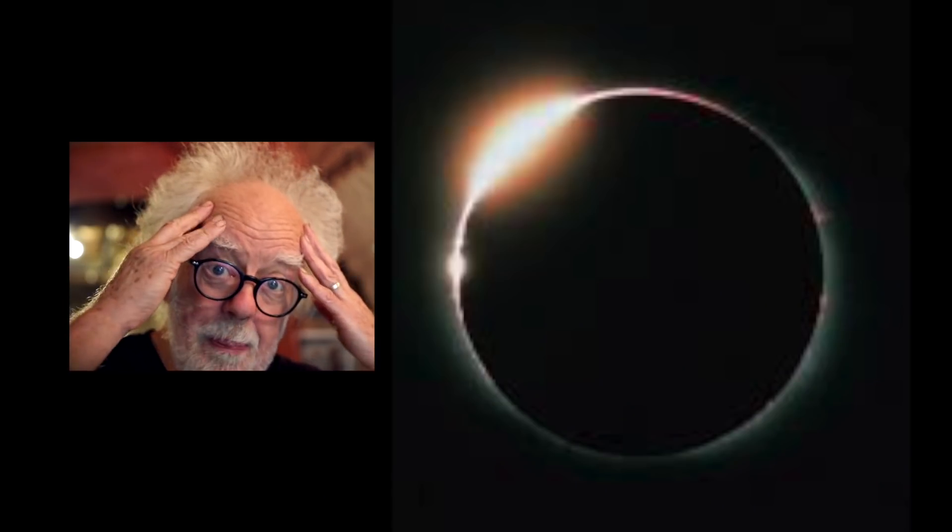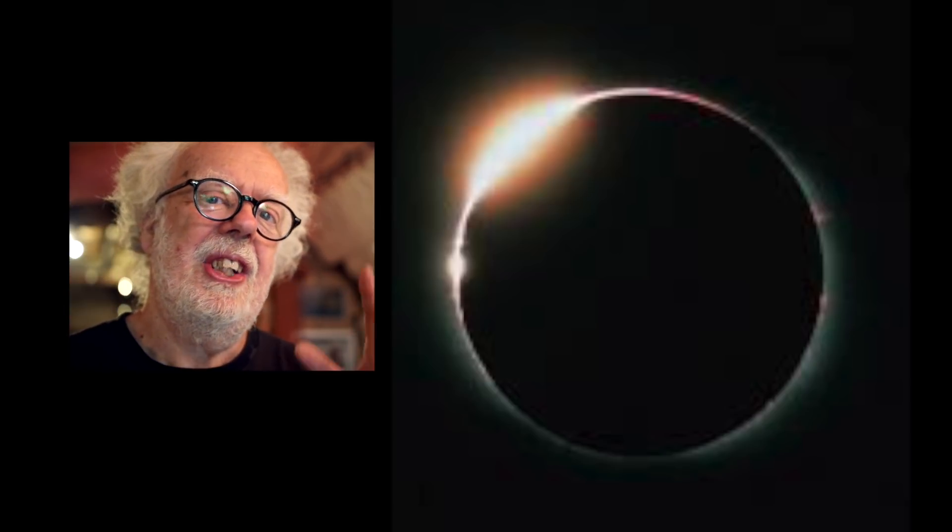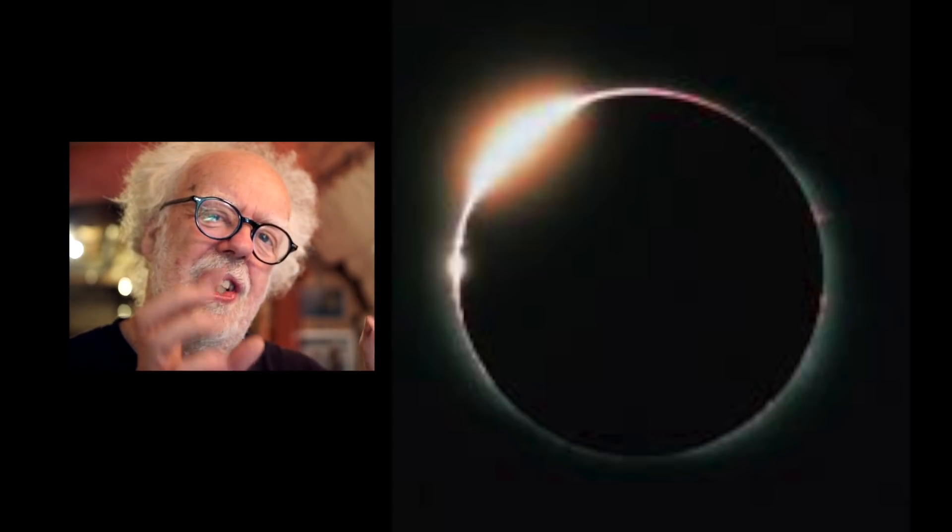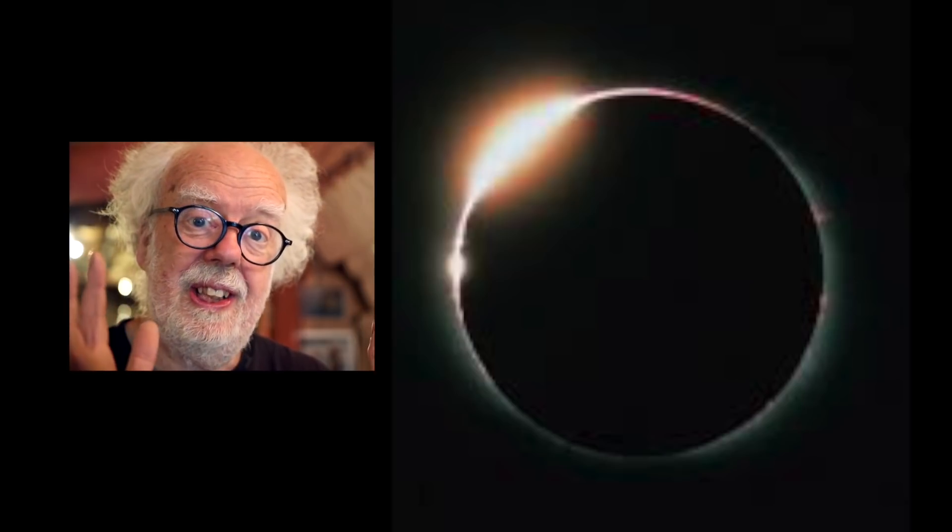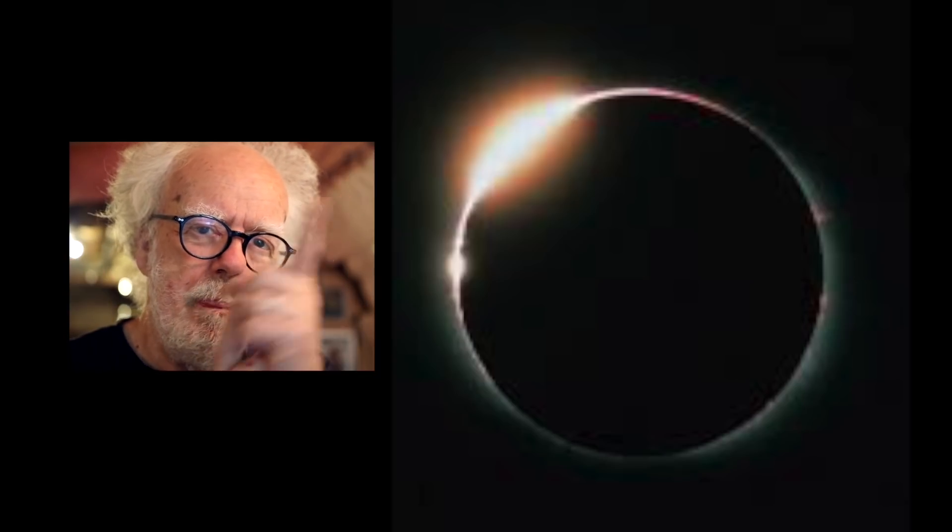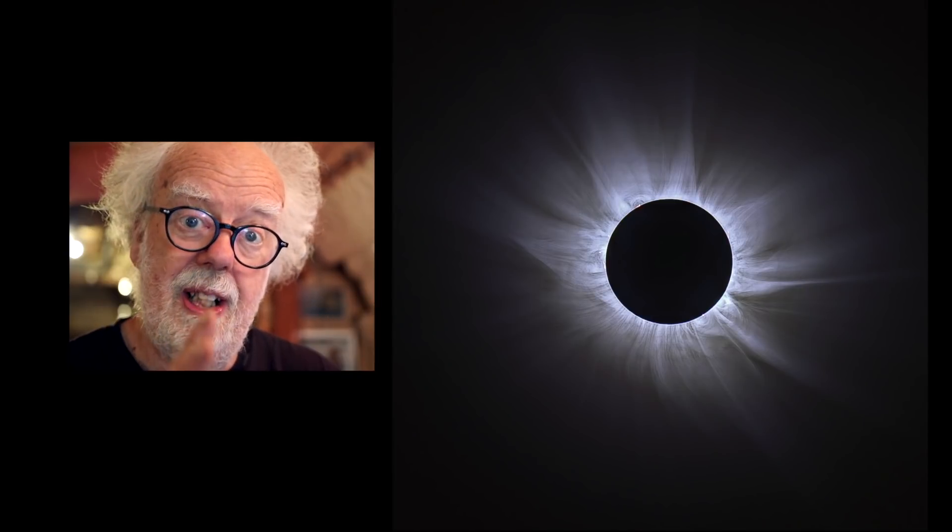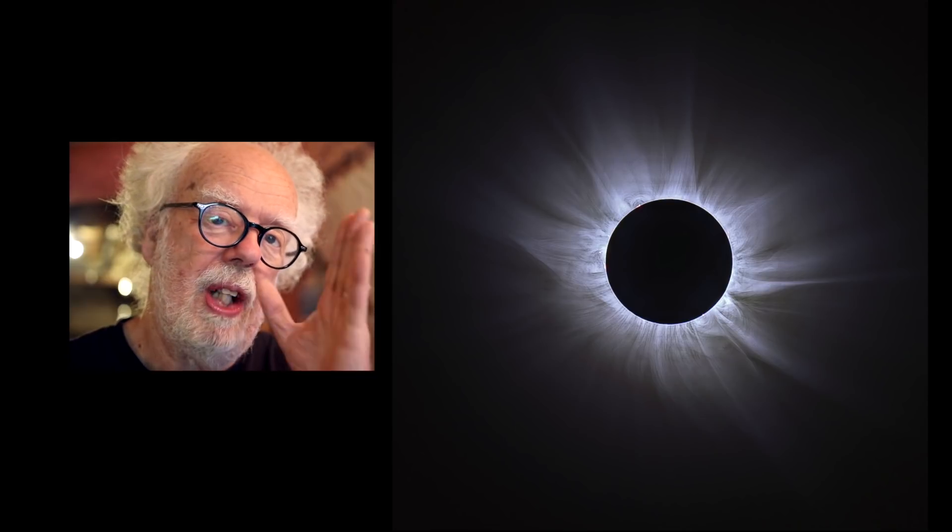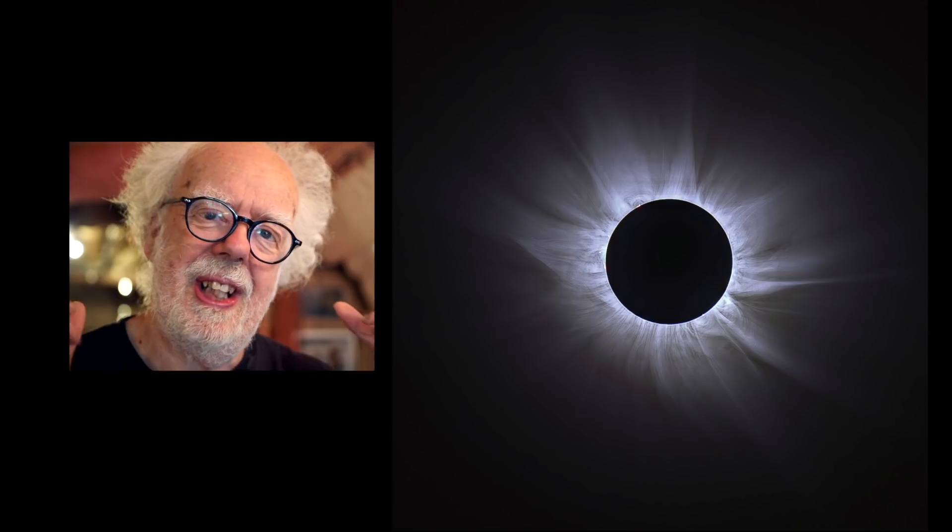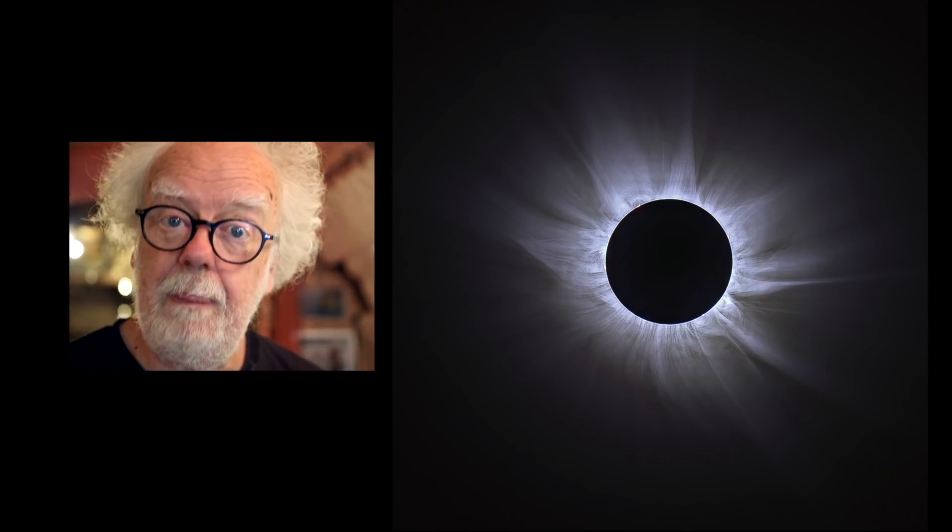And it all started with a thought experiment by Einstein. He said a star, which is normally there, if it was behind the mass, the gravitational mass of our sun, it would move. So they chose a star as a distant object that would line up perfectly behind the sun. But of course you can't see it.